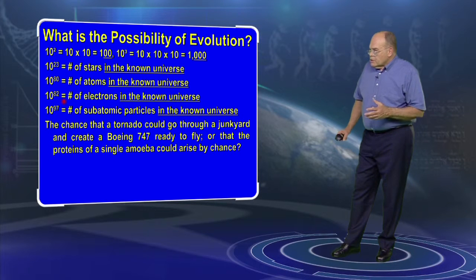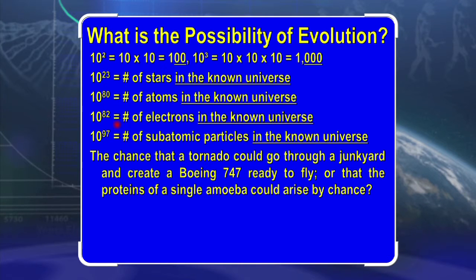Now, let's think. What is the chance that a tornado could go through a junkyard and create a Boeing 747 ready to fly, or that the proteins of a single amoeba could arise by chance? Please write the number 10 with the number 40,000 above the upper right hand corner—a 1 followed by 40,000 zeros.